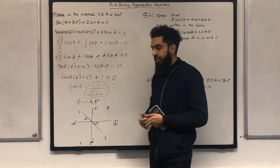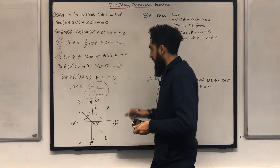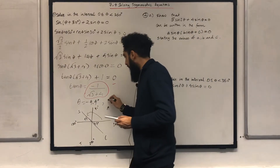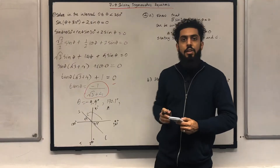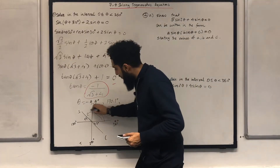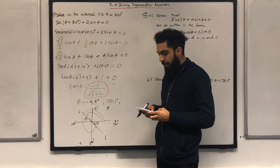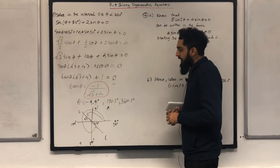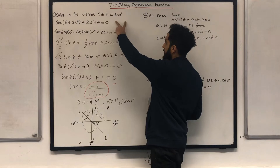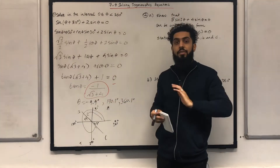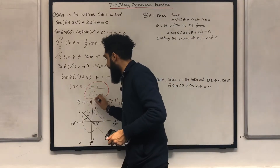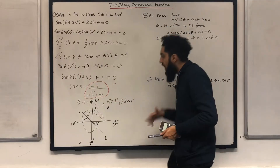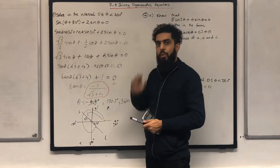My first positive solution will be 180 take away 9.9, which gives me 170.1 degrees. My second solution will be 360 minus 9.9 degrees, giving me 350.1 degrees. These are the two solutions in this interval. Minus 9.9 degrees is outside the interval, so I cross it out. Theta is equal to 170.1 degrees and 350.1 degrees. That completes question number one.